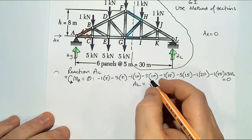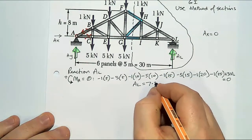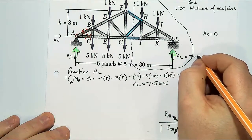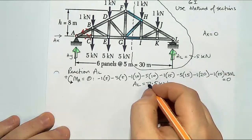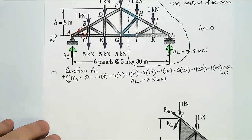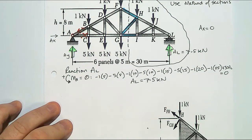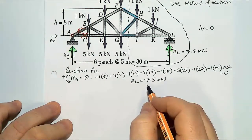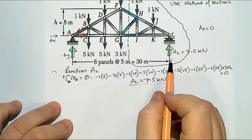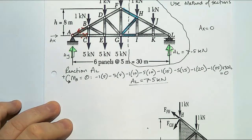Minus one times by AL. It's positive, therefore I've guessed the correct direction for the arrow for AL.